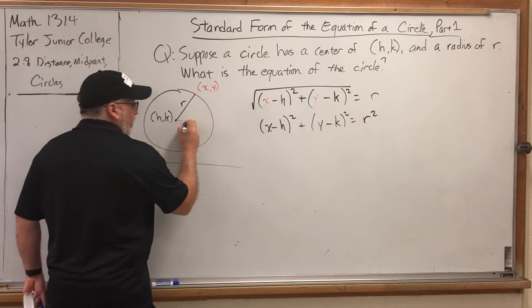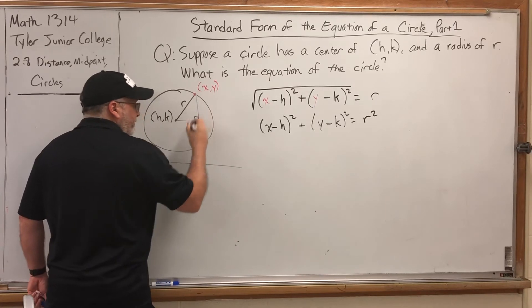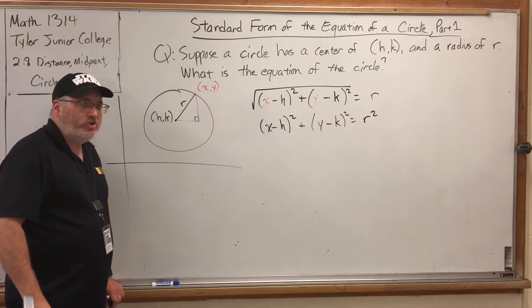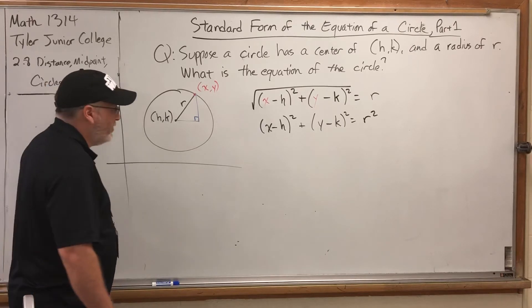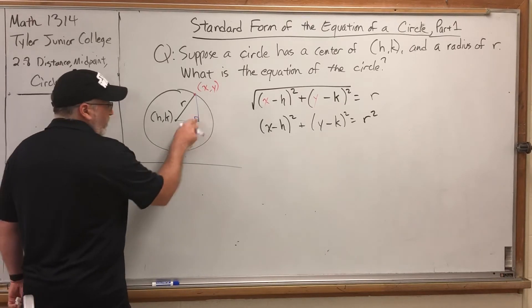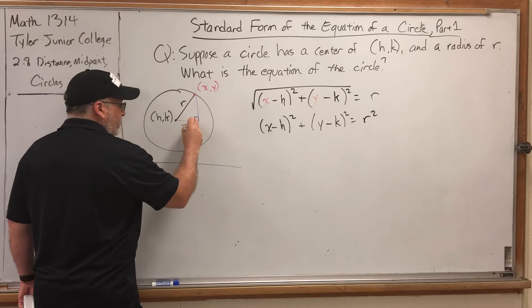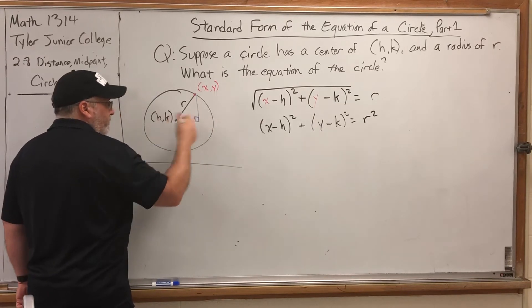If we drew the run and the rise, not only would we get a right triangle to which we could apply the Pythagorean theorem, but the run is the difference in the x's, and the rise is the difference in the y's.